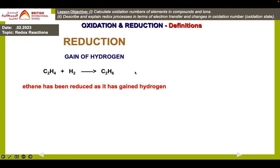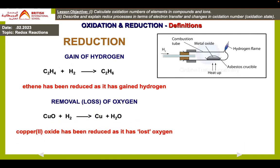This reaction — ethene plus hydrogen giving ethane — is an addition reaction of alkenes. More specifically, this is the hydrogenation of ethene giving ethane. This is reduction. But we have one more definition for reduction because hydrogen will not be involved in every reaction.